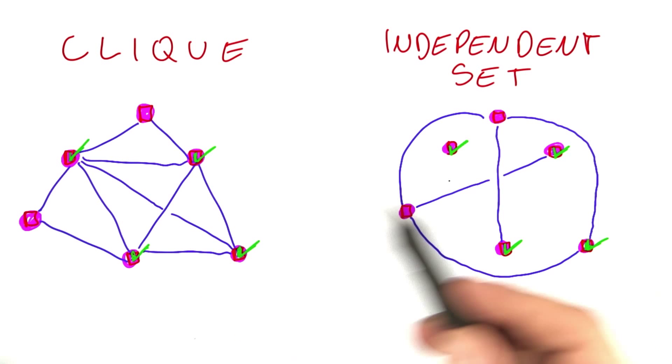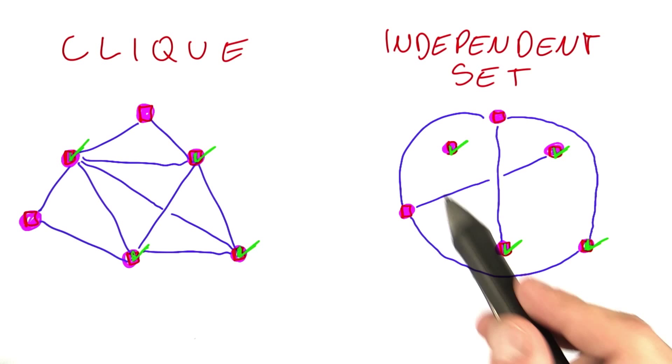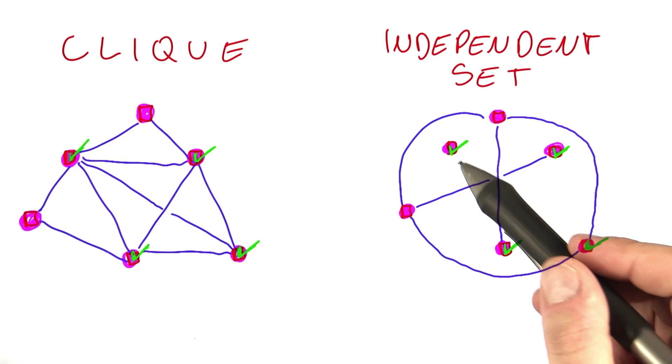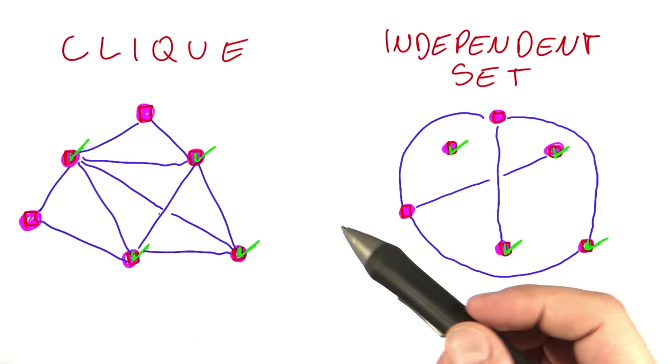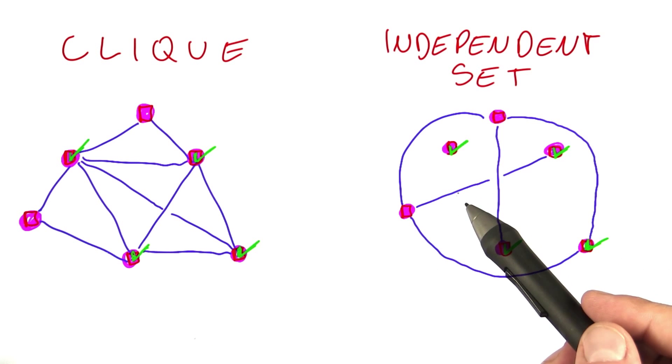And it's the same the other way around. So if you have found an independent set in a graph that is as large as possible, then the same vertices will form a clique if you build the inverse graph. So you connect all of the vertices that were not connected over here.